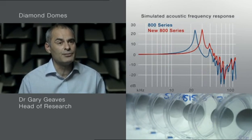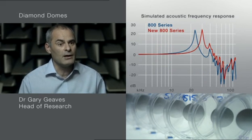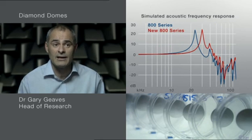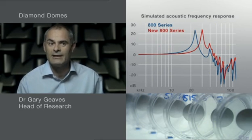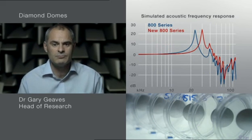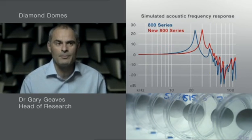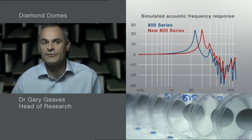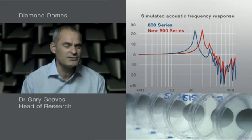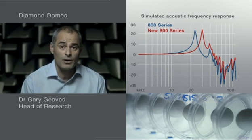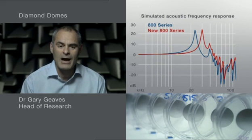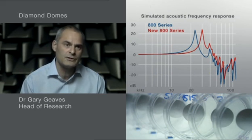We found that with each improvement in breakup frequency, the resulting tweeters sounded much cleaner. We found this really curious, because you can only really hear up to 20 kilohertz. What difference does it make if you improve a breakup frequency from 23 to 30 kilohertz? So we started to wonder why this was, and really about ways that we could improve the breakup frequency much further.